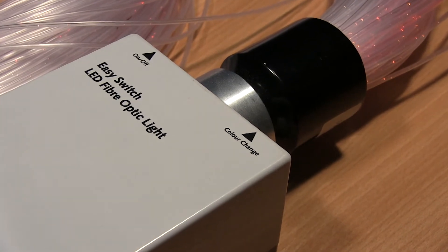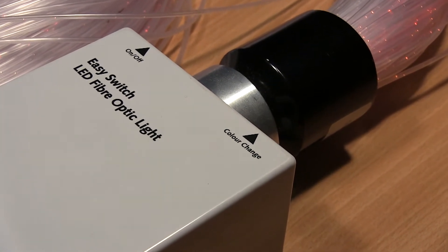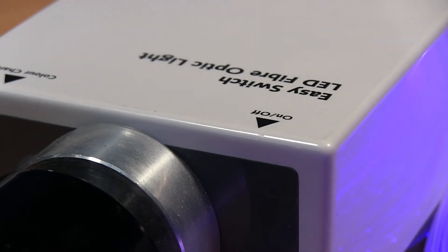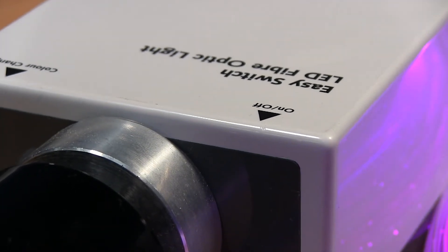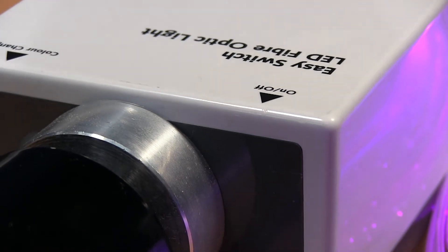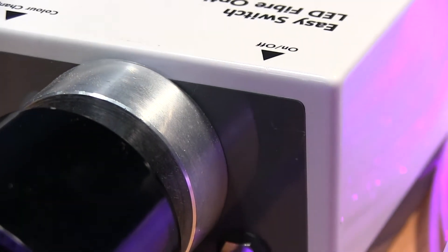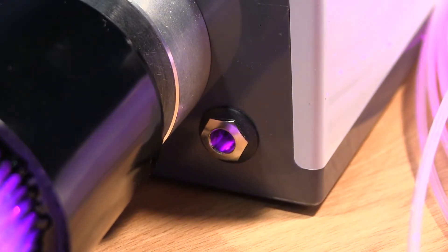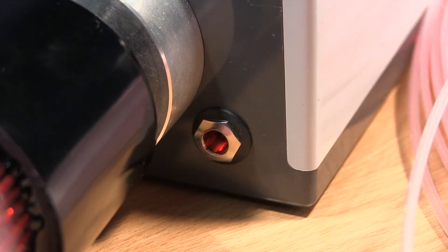Let's plug a single switch into those and see exactly what they do. At the top there, you can see it says Easy Switch LED Fibre Optic Light, and just in front of it, it says on/off. That indicates that when you plug a switch into that socket, it's going to switch it on and off.